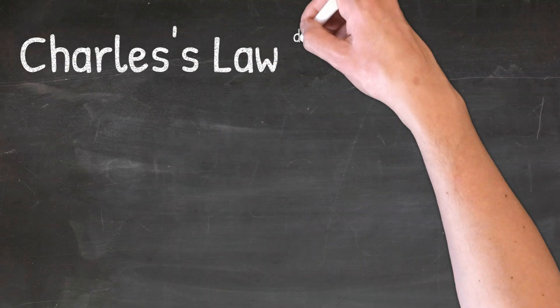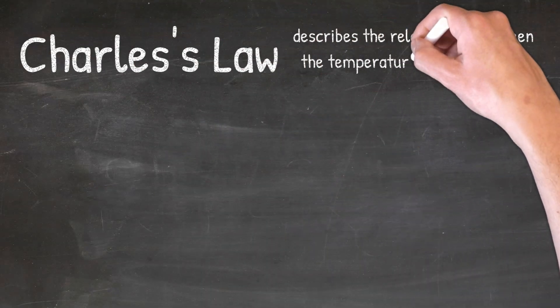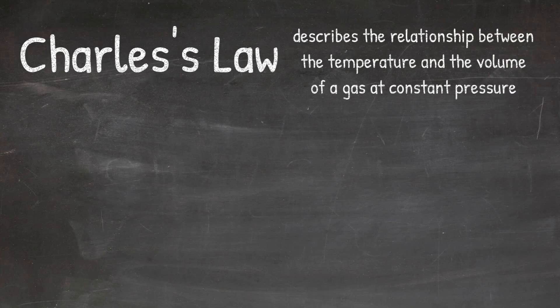Charles' law is a law that describes the relationship between the temperature and the volume of a gas at constant pressure. It is important to note that the pressure is remaining constant, because if the pressure were changing, then that would also have an effect on the temperature and the volume of the gas.